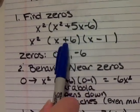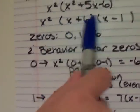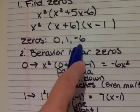And that will factor easily into x plus 6 and x minus 1. So we set those all to 0, and we come up with our zeros of 0, 1, and negative 6.